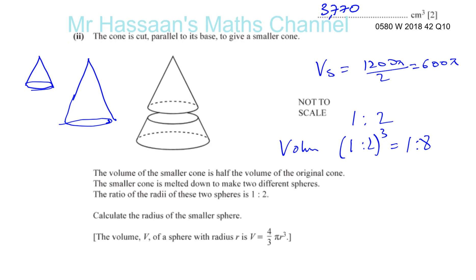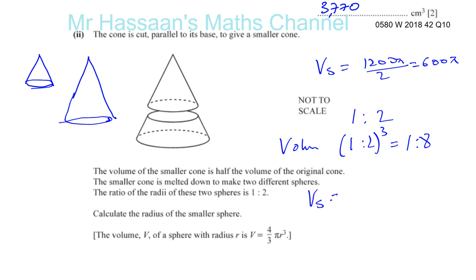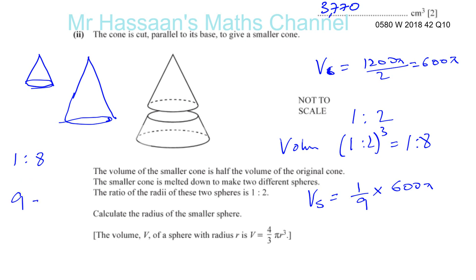The volume ratio of the two spheres is 1 to 8, so there are 9 parts in total (1 + 8 = 9). The smaller sphere takes up 1 part out of 9, so its volume is (1/9) × 600π = 600π/9 = 200π/3 cm³.